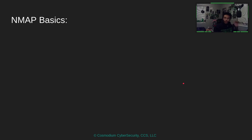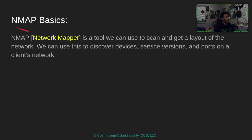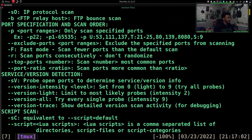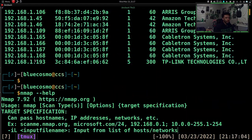We also have a tool called Nmap. I'm more than positive you guys have heard of Nmap, unless you're completely new to hacking, in which case it's perfect for you. Nmap is basically Network Mapper — it is a tool we can use to scan the network and get a layout of the actual network. We can use this to find devices, service version ports, and different clients on the actual network. Nmap actually has a website we can scan for some basic ideas. We can do nmap --help to get information on Nmap and see all these different flags.